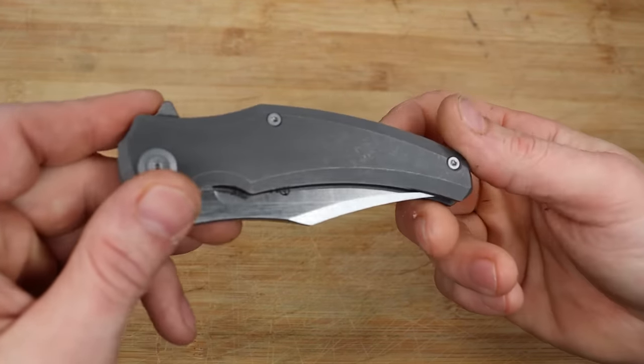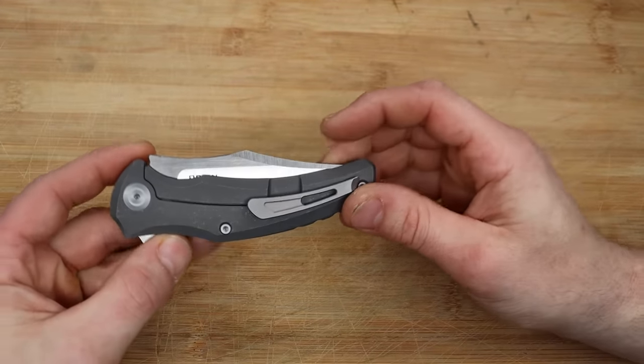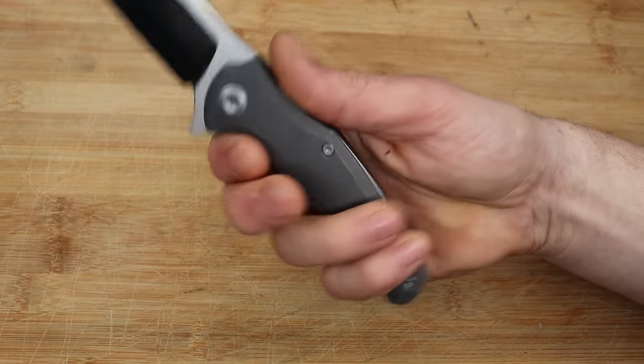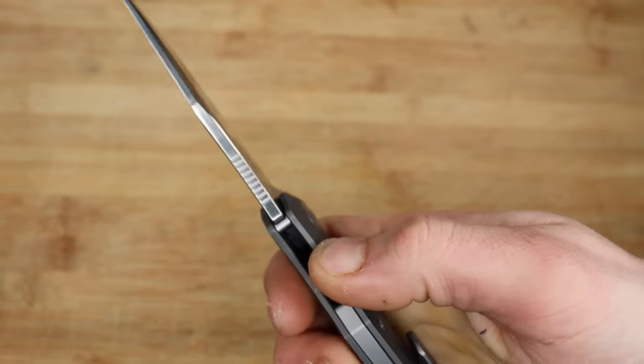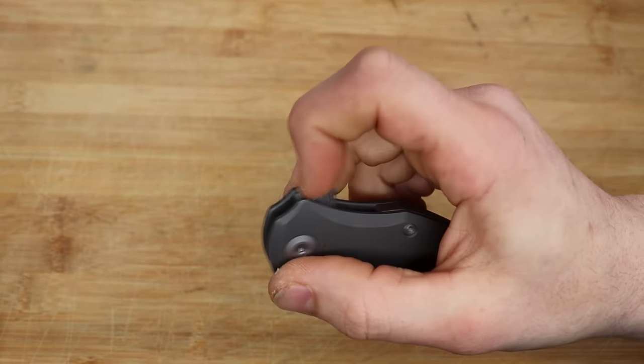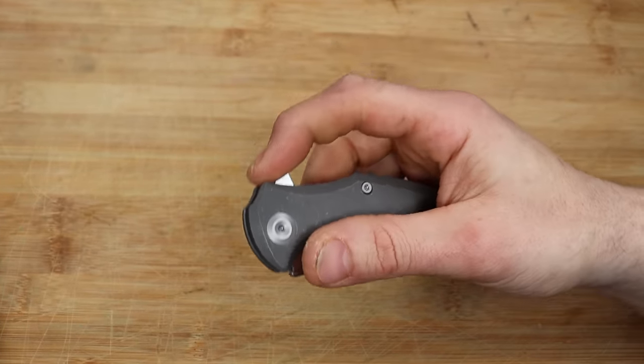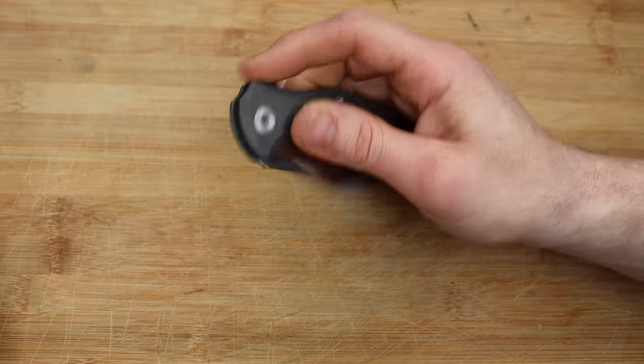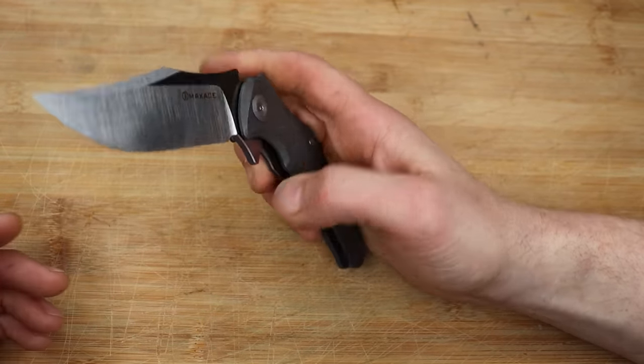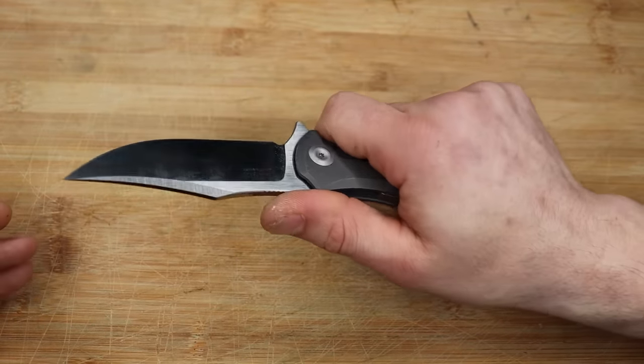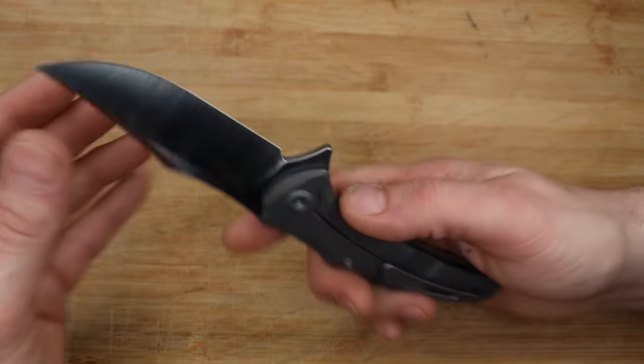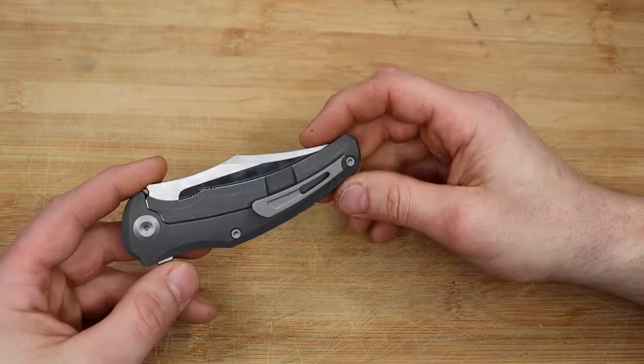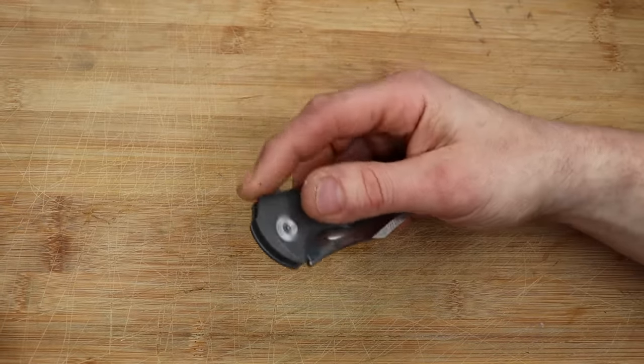The finish on the titanium is stonewashed. I really like this stonewashed finish, feels really good in the hand. The jimping, though non-existent, might as well not even be there. It's a big knife and it's pretty damn slicey. It looks really good, I definitely like it.